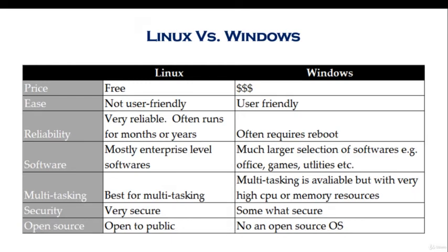Security: Linux is very secure and Windows is somewhat secure. Windows is more vulnerable to hacking because it is facing the internet — people run social media, chatting sessions, and a lot of different things, and they are accessing the internet. Whereas in Linux, you typically don't access the internet in the same way.